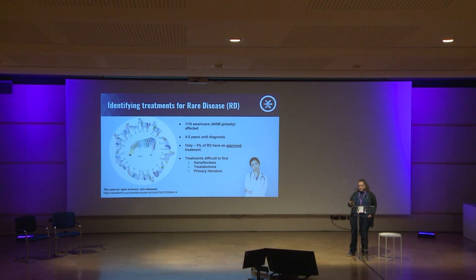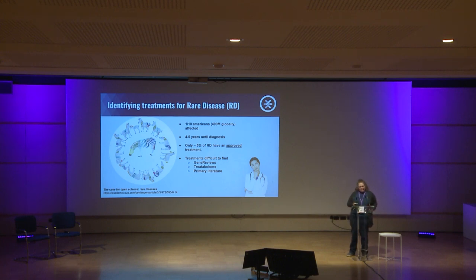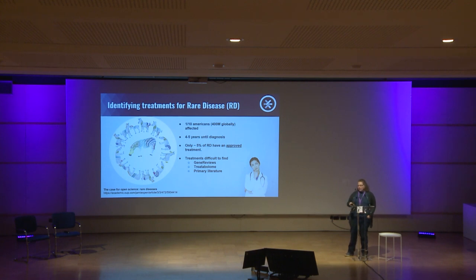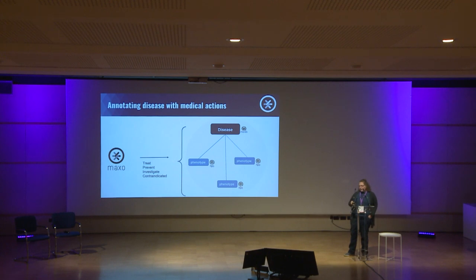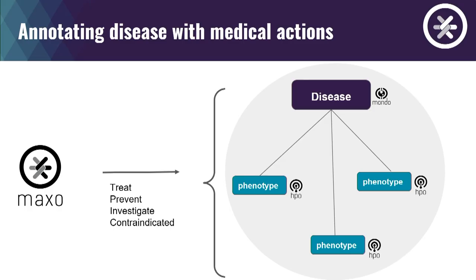Treatments have been difficult to find. There are good resources like Gene Reviews and Chitabalum, and there are a number of papers in the primary literature. But for extremely rare diseases, very few sources bring all of this together, and only 5% of rare diseases have treatments — 95% do not. So we are identifying any sources that can treat either directly the disease itself or the disease phenotypes, because medical actions can rarely interact directly with the disease, but often are focused on the subcomponents.